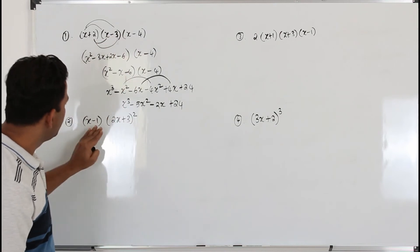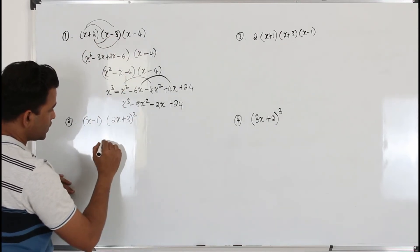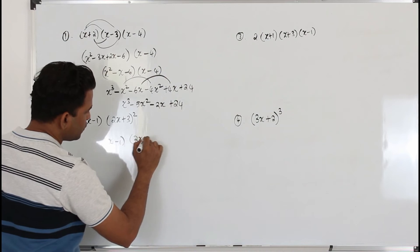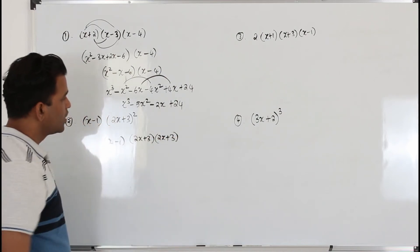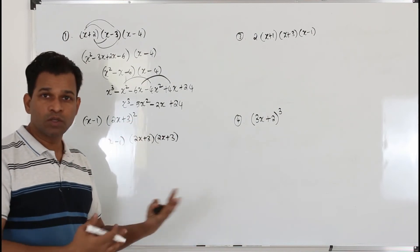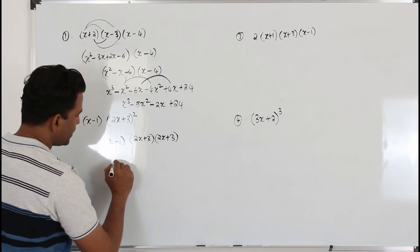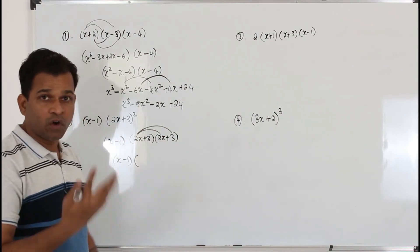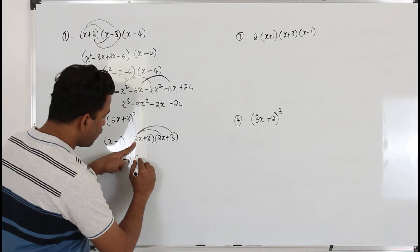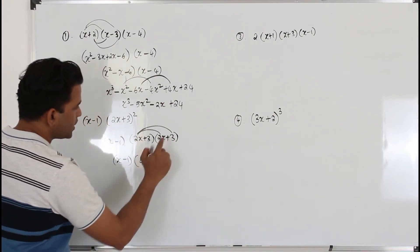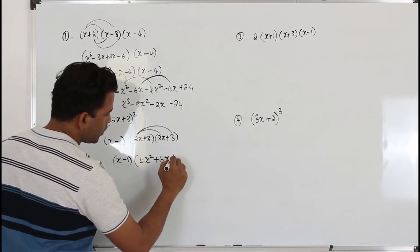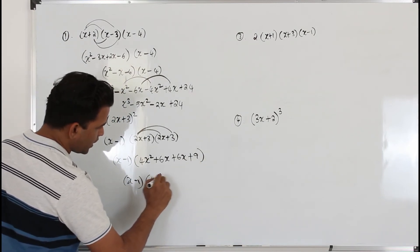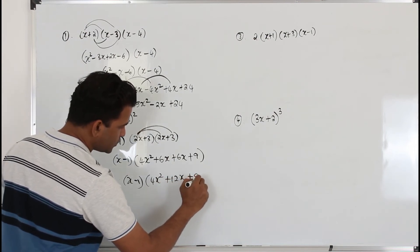Sometimes instead of three separate brackets you'll have a square. Simplify the squared bracket first and keep the other factor as it is. Write (2x+3)² as (2x+3)(2x+3). Take 2x and multiply both — 2x times 2x: don't write it as 4x, you need to multiply, 2 times 2 is 4, x times x is x square, so 4x square. Then 2x times 3 is 6x, and 3 times 3 is 9. So (x-1) times (4x square plus 12x plus 9).